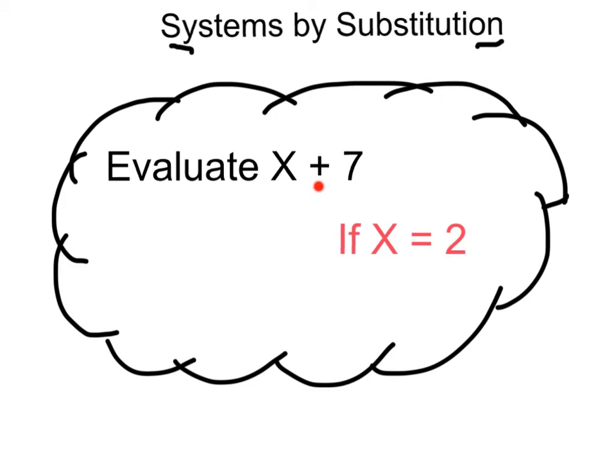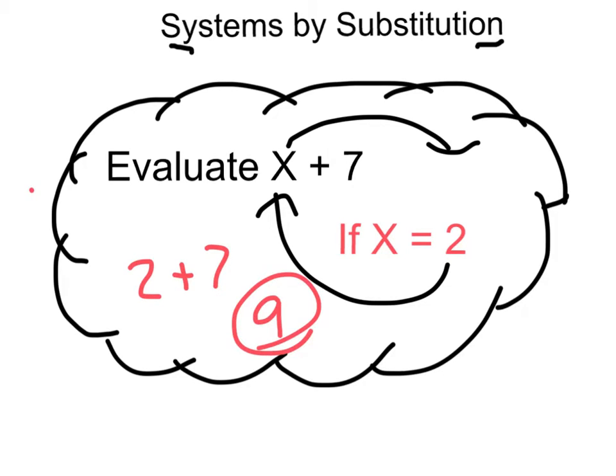Evaluate x plus 7 if x equals 2. Well, sub, coach. x, you're out. 2, you're in. That would just give you 2 plus 7 or 9, right? We're just subbing in this 2 for that value of x. And that's all substitution is. You find out what one variable equals, you plug it back in, and then you go from there.